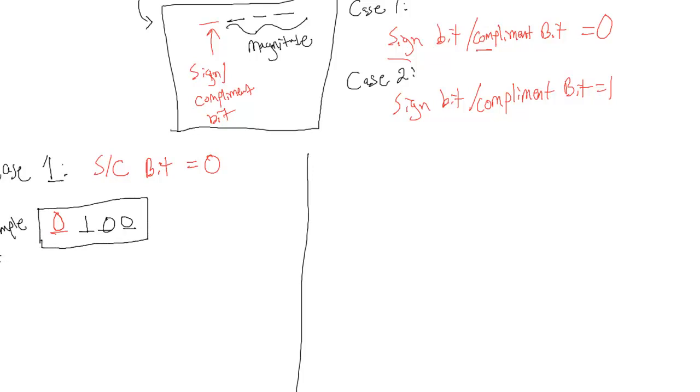So in this system, if the sign bit is 0, the output is simply a positive magnitude, positive of the magnitude field. So in this case, it's going to be positive 1, 2, 4, positive 4.